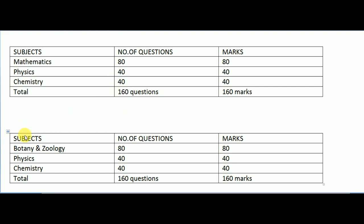Coming to PCB — that is Physics, Chemistry and Biology — Biology will contain two different subjects: Botany and Zoology. Botany and Zoology together make Biology. Biology will contain 80 questions, one mark per question, so 80 questions and 80 marks.